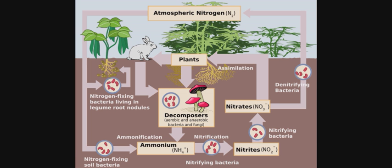Human impacts on the nitrogen cycle include burning fossil fuels, application of nitrogen-based fertilizers and other activities, which increase nitrogen levels. Nitrogen applied to agricultural fields enters river and marine systems, altering biodiversity and changing the food web structure.